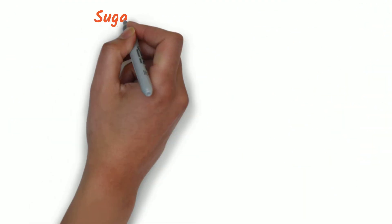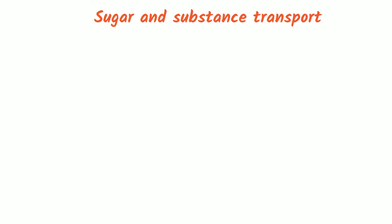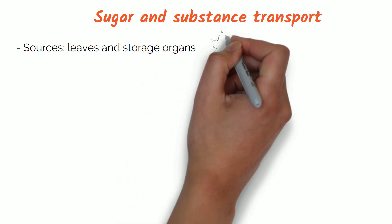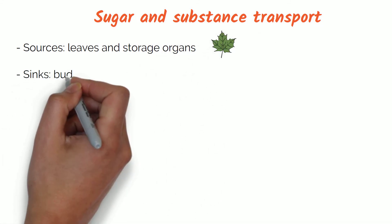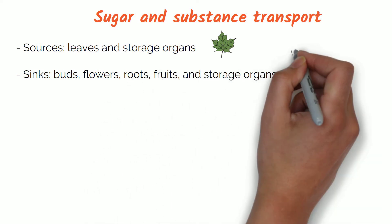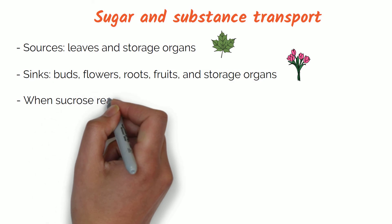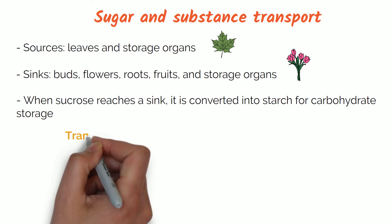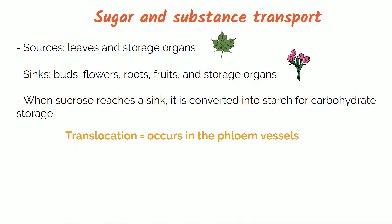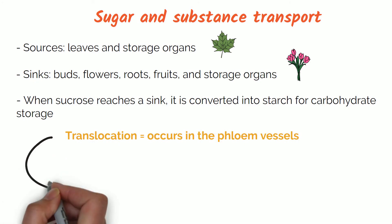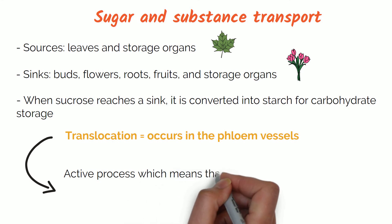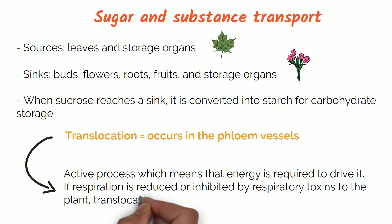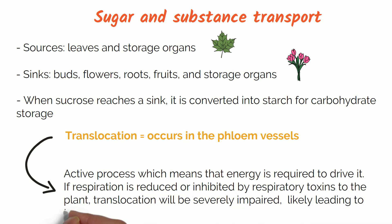Now onto sugar and substance transport in plants. Sugars and dissolved substances move within the plant from where they are made — the source, for example leaves and storage organs — to where they are required or stored, known as sinks, such as buds, flowers, roots, fruits and storage organs. When sucrose reaches a sink it is converted into starch for carbohydrate storage. The process of movement between these two areas is known as translocation and this occurs in the phloem vessels of the plant. Translocation of sugars and dissolved amino acids is an active process, meaning that energy is required. If respiration is reduced or inhibited by respiratory toxins, translocation will be severely impaired, likely leading to the death of the plant.